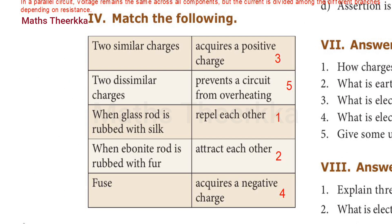Fourth roman: match the following. Two similar charges repel each other. Two dissimilar charges attract each other. When glass rod is rubbed with silk, acquires a positive charge. When ebonite rod is rubbed with fur, acquires negative charge. Fuse prevents the circuit from overheating.